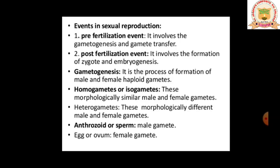The next type is heterogametes. These gametes are morphologically different, so you can easily identify which is male and which is female. The female gamete is large in size and non-motile, while the male gamete is smaller and motile. Structurally the male and female differ externally. Such gametes are called heterogametes.